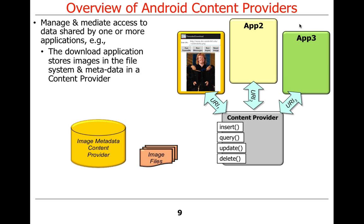Further along in the course, we'll see an example where an image download application uses a content provider to store information about downloaded images. The images themselves — the blobs — are stored as files, but there's also metadata we might want to store: the creation time, image type, image size, or other properties. Those things could be stored as metadata in a content provider.